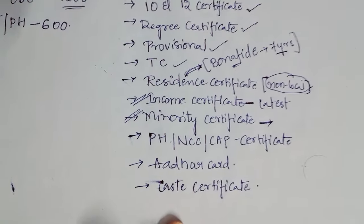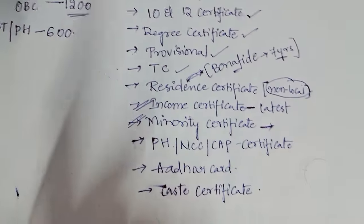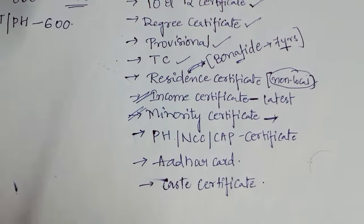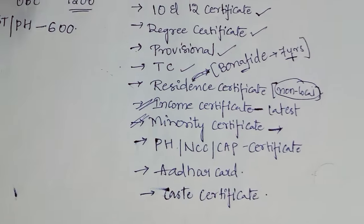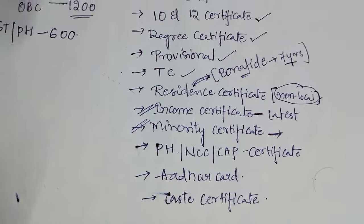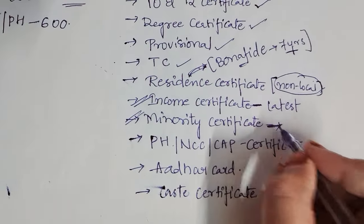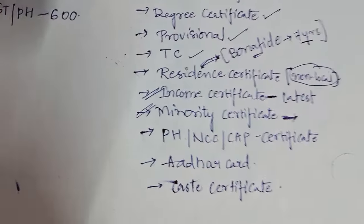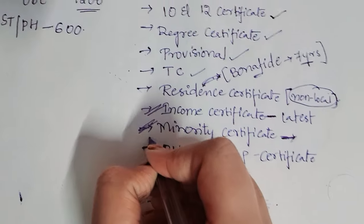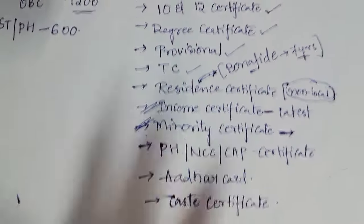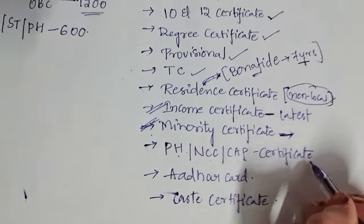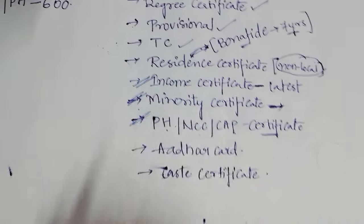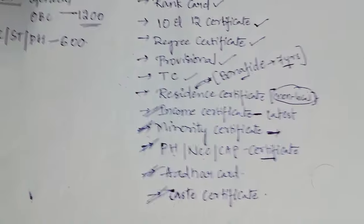You also need to keep the minority certificate. I have a video on my channel explaining how to make the minority certificate, and I've also uploaded it on my Telegram channel. Download that certificate and fill it up as per my instructions. The link will be in the description box. Additionally, if you are physically handicapped or have an NCC certificate, bring those as well.